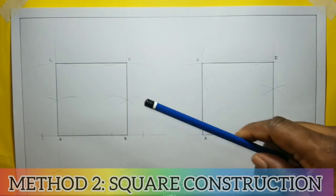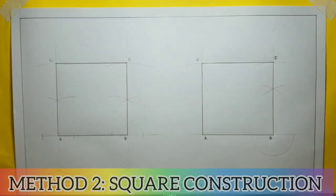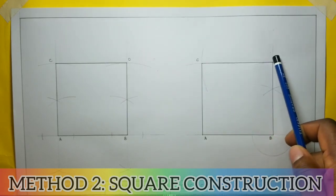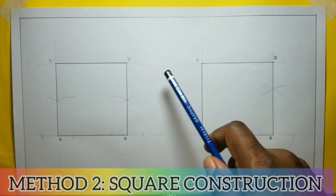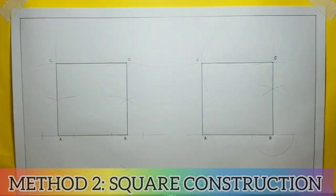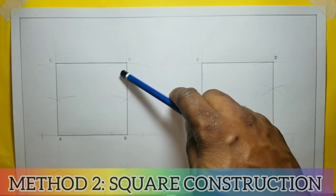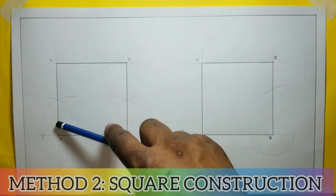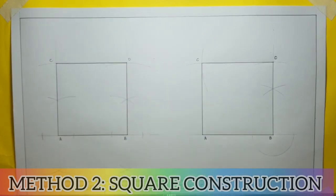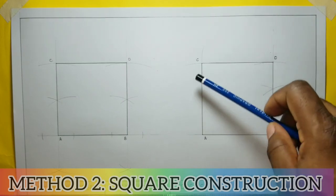So a square is a quadrilateral — the word 'quad' means four — having four equal sides, all equal to each other. A square also contains four internal 90-degree angles and four edges: one, two, three, four.